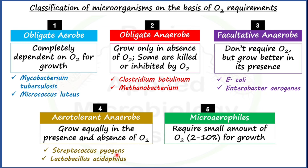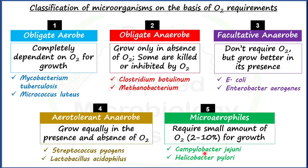For microaerophiles, Campylobacter jejuni — the causal agent of campylobacteriosis — and Helicobacter pylori — the well-known agent of gastric ulcers — are the key examples.